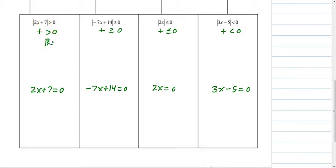Well, when is a positive greater than zero? Always. All real numbers. When is a positive? Always. When is it less than zero? Never. And never. Remember, positive cannot be less than zero.